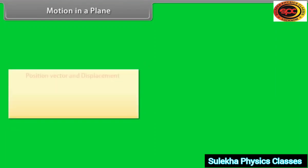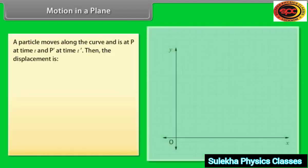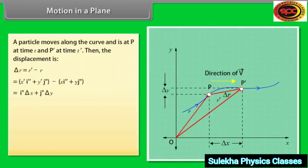Motion in two dimensions using vectors: Position vector and displacement. The position vector R of a particle P located in a plane with reference to the origin of an XY reference frame is given by R = Xi + Yj. A particle moves along the curve and is at P at time T and P' at time T'. Then the displacement is ΔR = R' - R. By putting values we get ΔR = iΔX + jΔY.